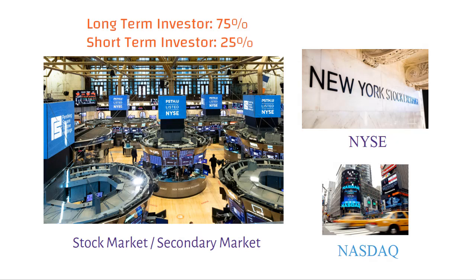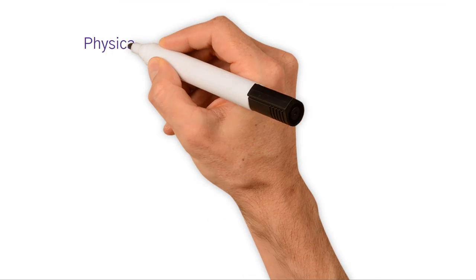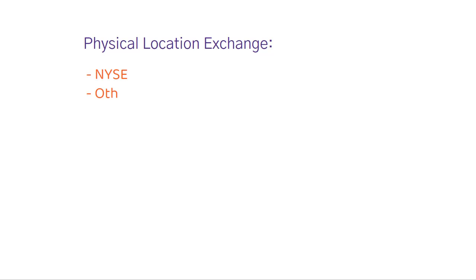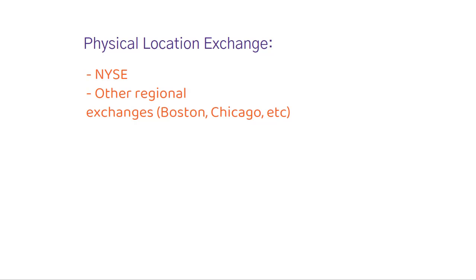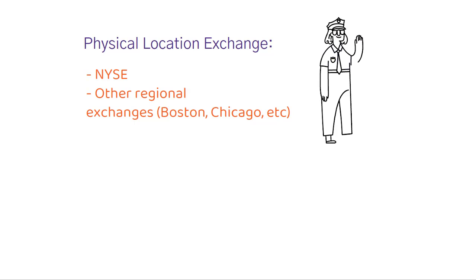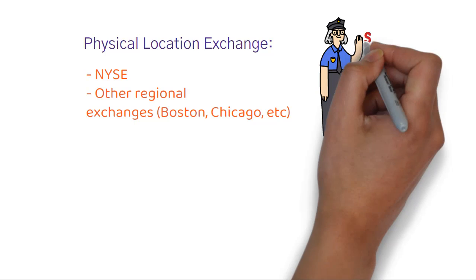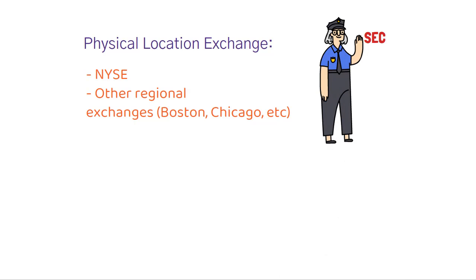There are two basic types. Physical location exchanges include the NYSE and several regional exchanges. These formal organizations have tangible physical locations that conduct auction markets in listed securities. Securities exchange commissions, or SEC, facilitate communication between buyers and sellers.